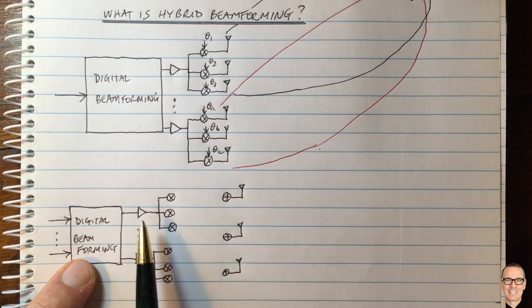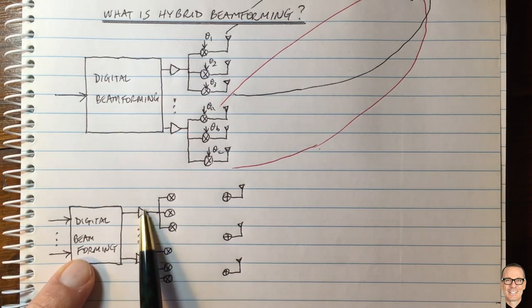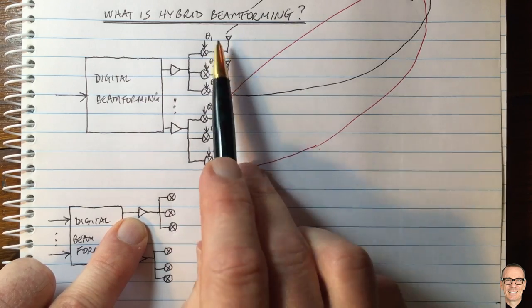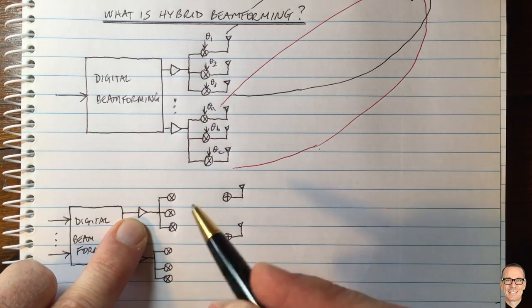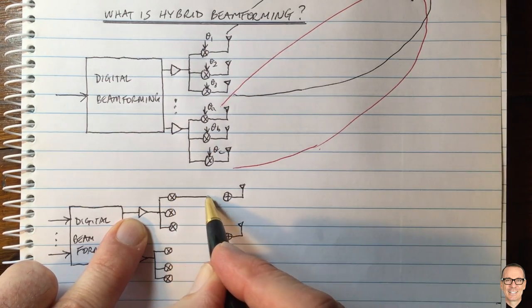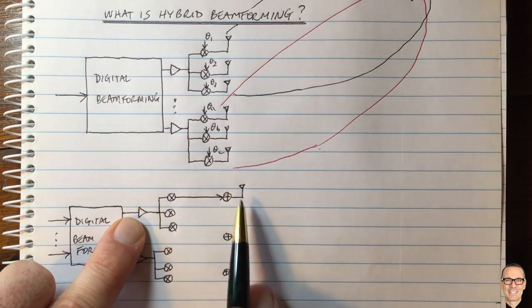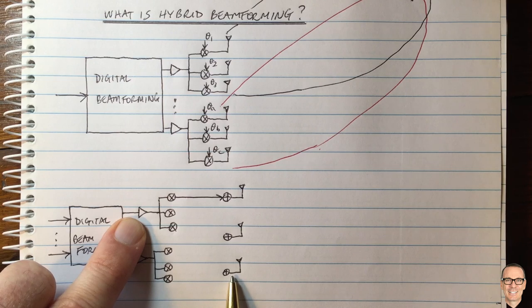So again digital beamforming coming out into a small number of amplifiers. Each amplifier could go into an analog beamformer just like here, but then we could have circuitry to connect each output from each amplifier to each of the transmitting antennas.